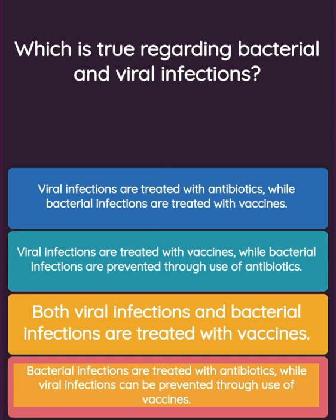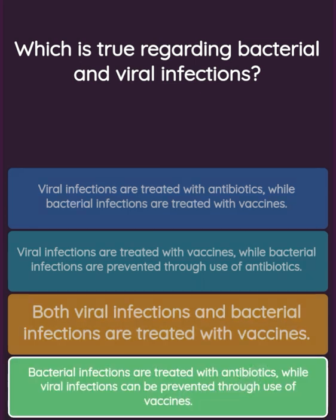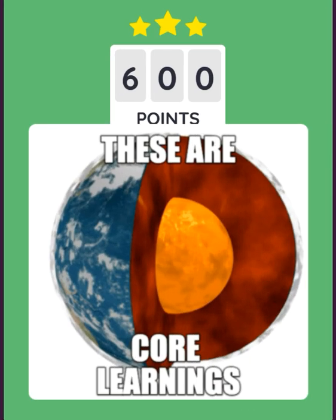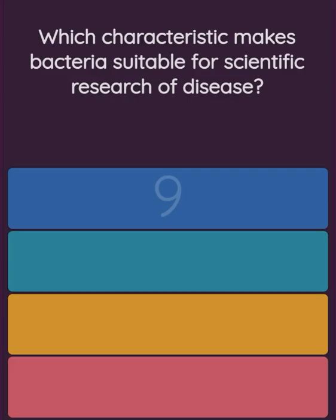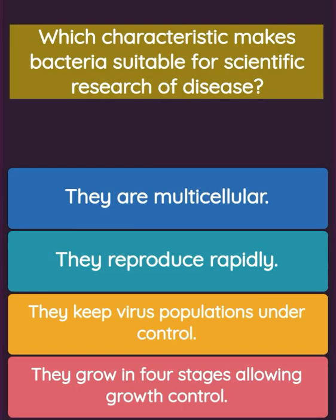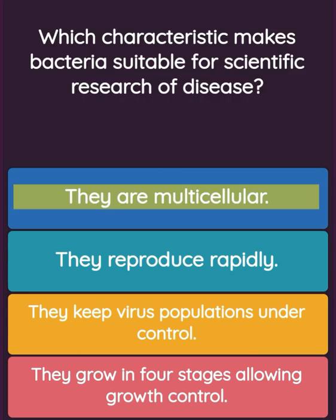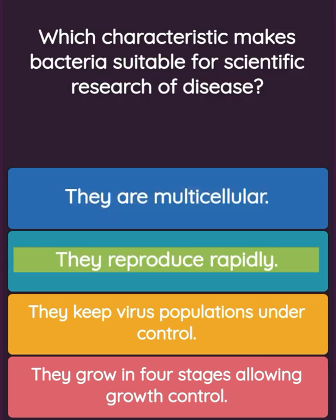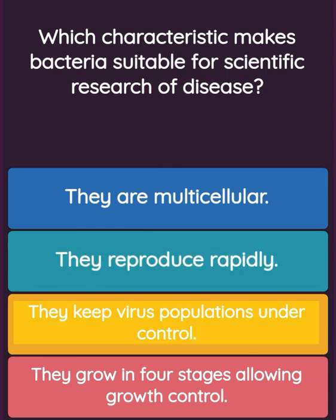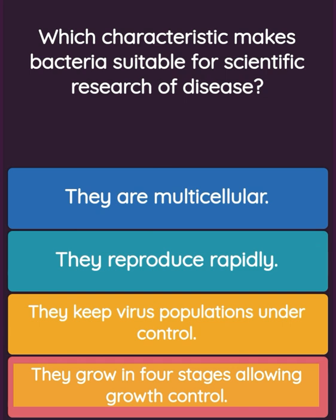Option three: viral infections are treated with vaccines while viral infections can be prevented through use of vaccines. Question: Which characteristic makes bacteria suitable for scientific research of disease? Option one: they are multicellular. Option two: they reproduce rapidly. Option three: they keep virus populations under control. Option four: they grow in four stages allowing growth control.